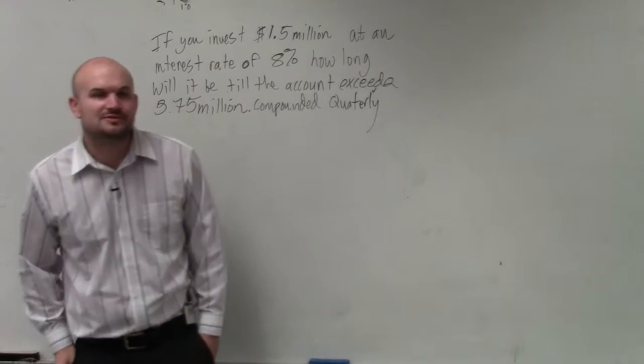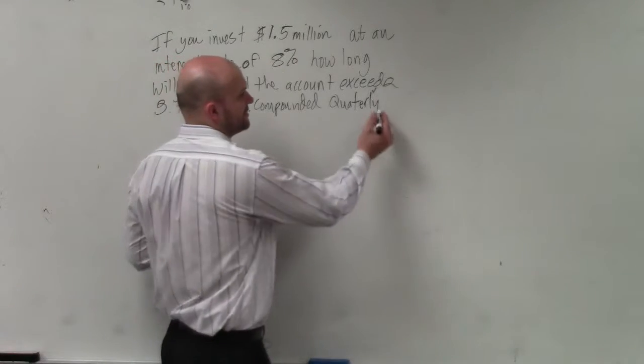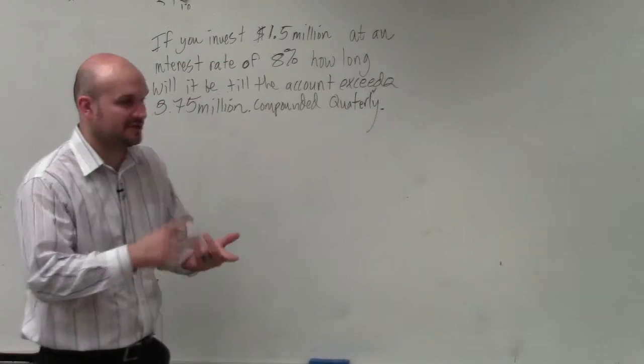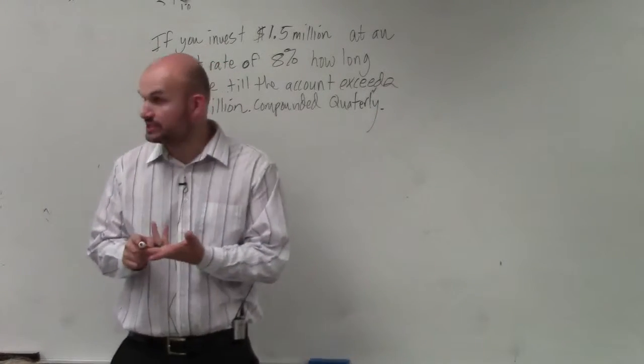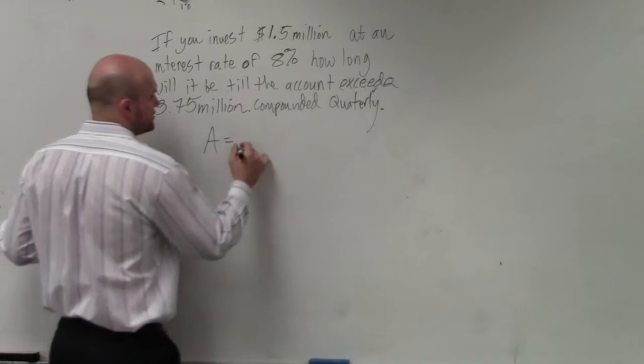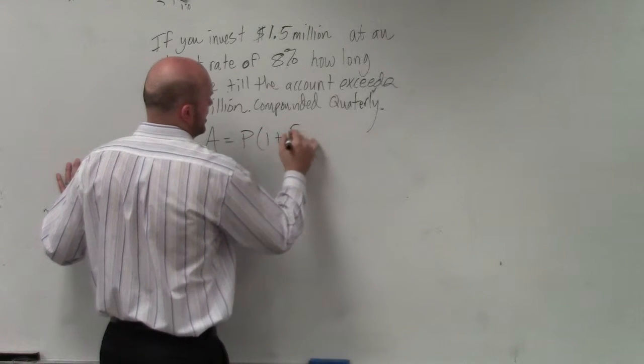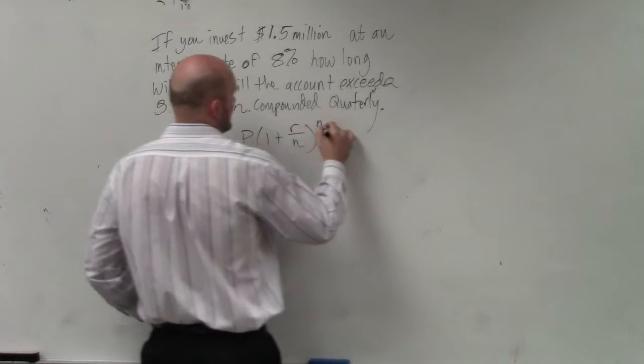So what we need to do in this case is understand that it's either going to be our compounded interest or our continuous interest. And so for our compounded interest, we have A equals P times 1 plus r divided by n raised to the n times t.